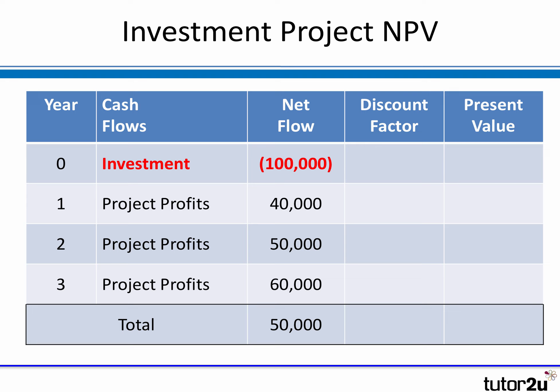Here's an example. We have a three-year project: at year zero we invest 100,000, and in the next three years the project generates cash flows of 40,000, 50,000 and 60,000 — giving net profits of 150,000, or 50,000 after the 100,000 investment. Now we want to discount those future cash flows. Pause the video, use the discount factors provided, and calculate the present values for each cash flow.